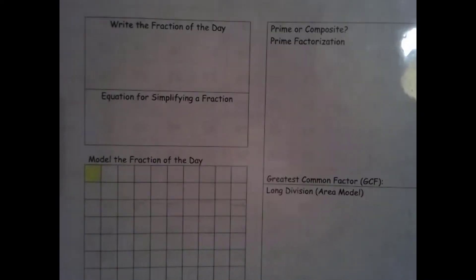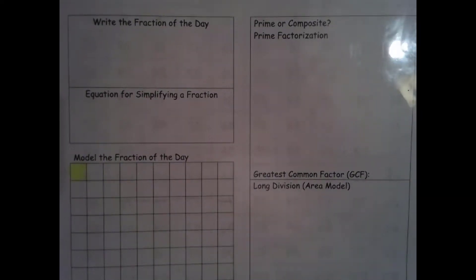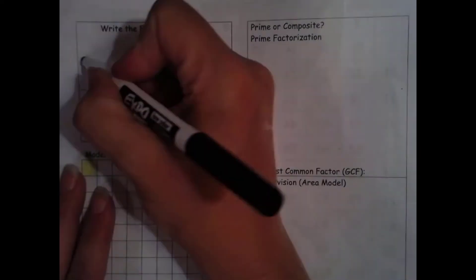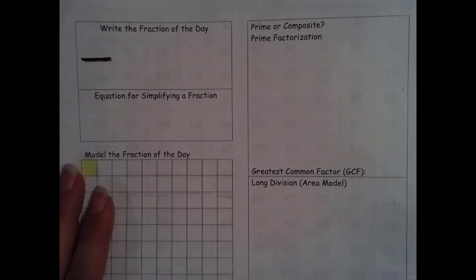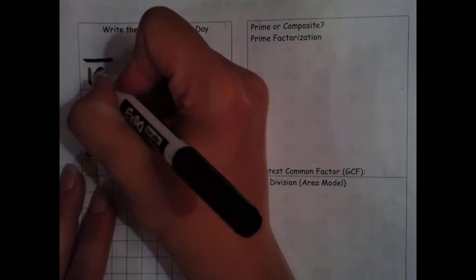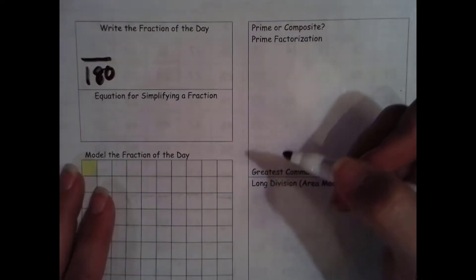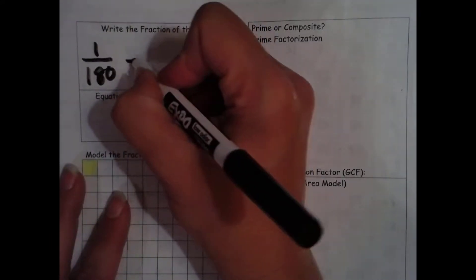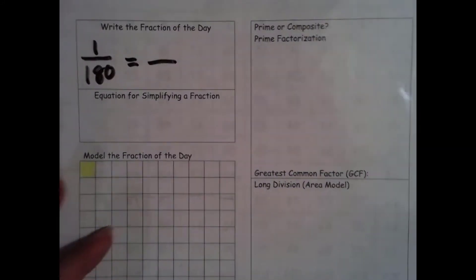What is staying the same though is writing our beginning fraction. Our denominator is the total amount of school days, which is still 180. Our numerator is the day we're on. We're on day 1.